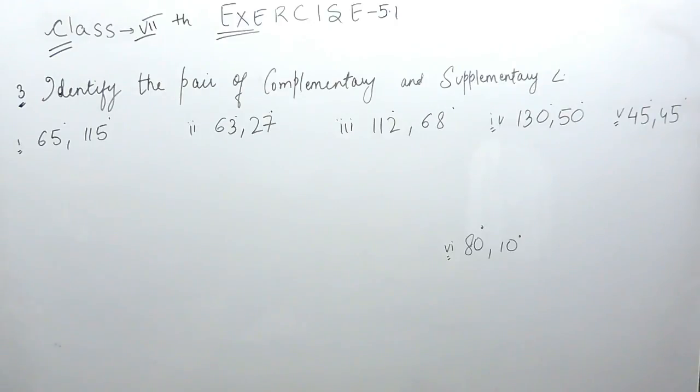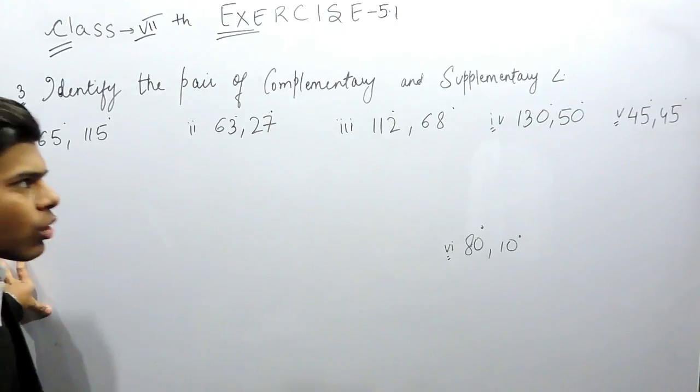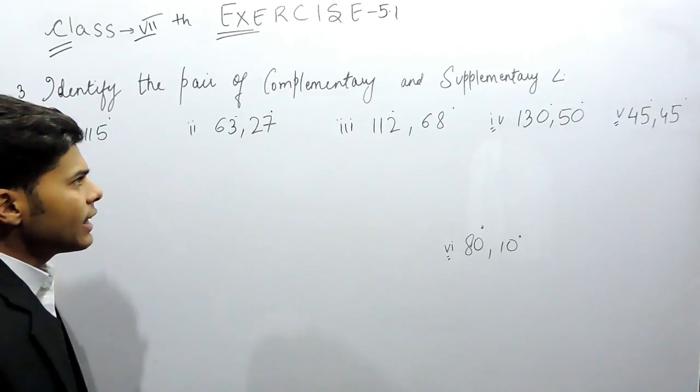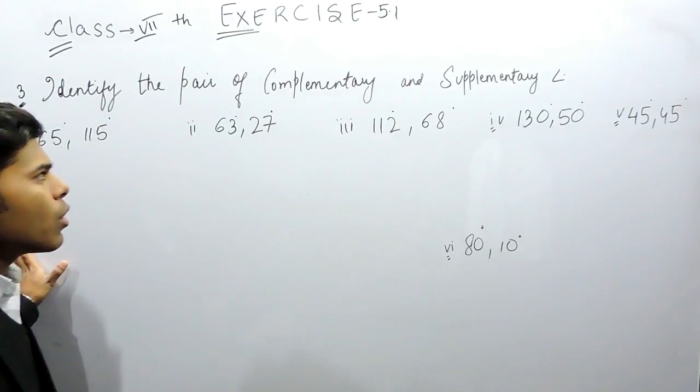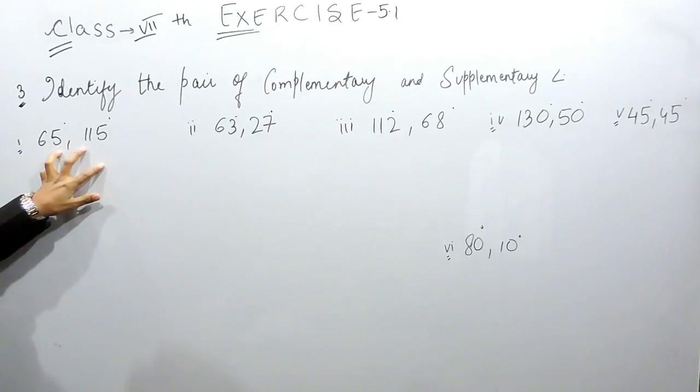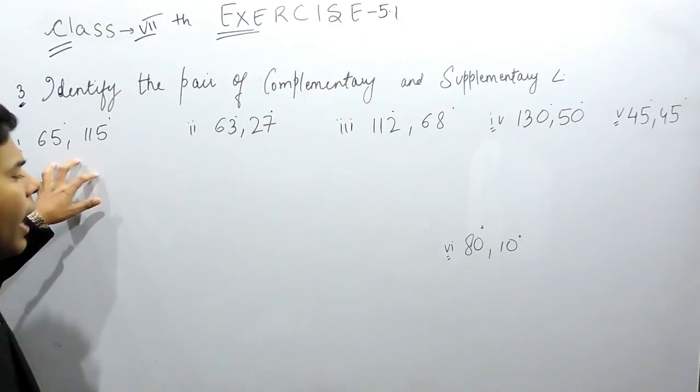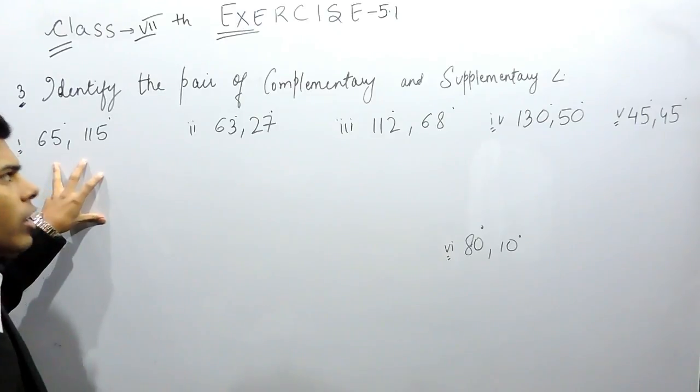So as I told you, complementary angles are those angles whose sum equals 90 degrees and supplementary angles are those angles whose sum equals 180 degrees. So we are given these two angles, we'll add them and check whether the sum is 90 or 180.